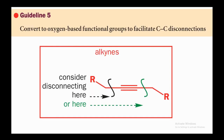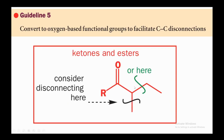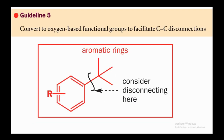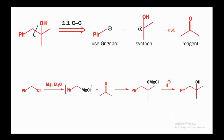Guideline five: convert to oxygen-based functional groups to facilitate C–C disconnection. For alkynes, you can disconnect from either side. For ketones and esters, you can disconnect the alpha carbon from either direction — this is alpha-carbon alkylation. For aromatic rings, disconnect at the alkyl position and prepare by Friedel–Crafts alkylation. For a tertiary alcohol, disconnect from one side to generate a negative charge on one carbon and a positive charge on the central carbon: the positive charge equivalent is acetone (or ketone), and the negative charge equivalent is a Grignard reagent. React the alkyl halide with magnesium in diethyl ether to make the Grignard, react with acetone, then hydrolyze to give the alcohol.